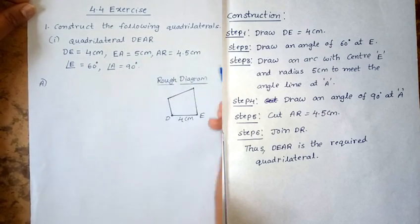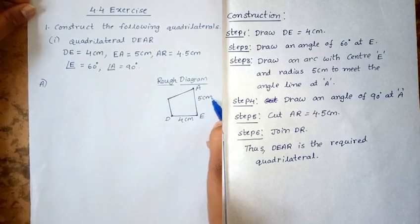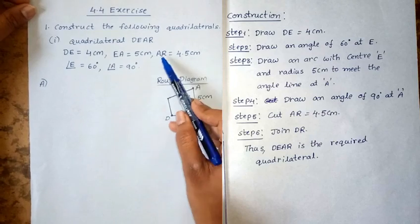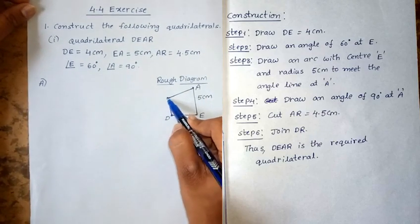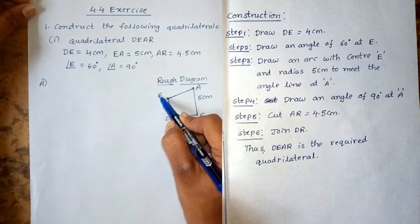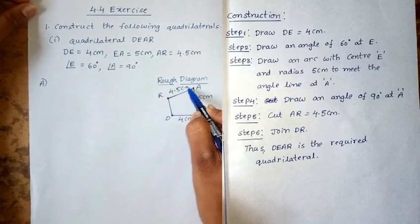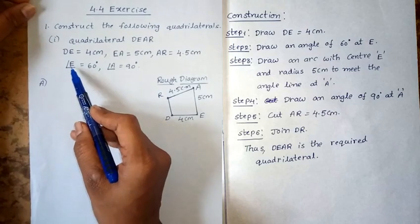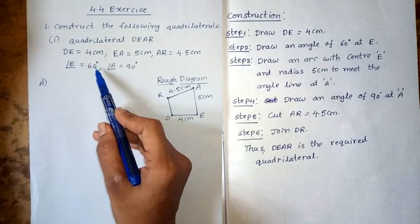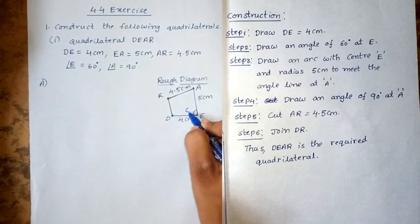Next, EA equal to 5cm. Consider point A, so EA equal to 5cm. Next, ER equal to 4.5cm. Consider point R, so ER equal to 4.5cm. Next, angle E equal to 60 degrees. This is angle E, 60 degrees.